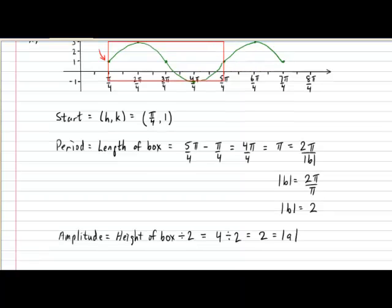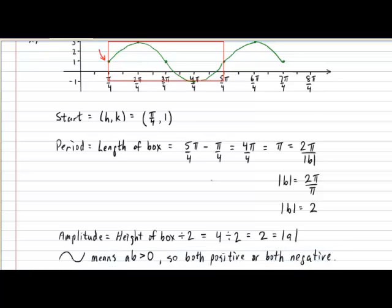Finally because of our chosen start point our cycle begins with a hump and ends with a dip. This means that the product of a and b variables should produce a positive result and the only way this can happen is if both a and b were positive or both a and b were negative.